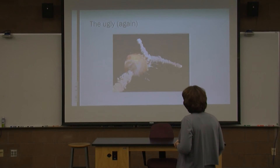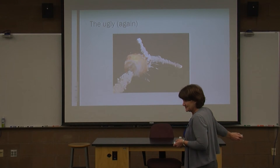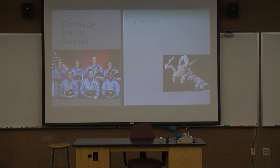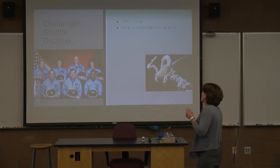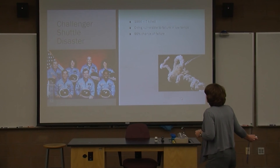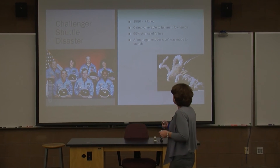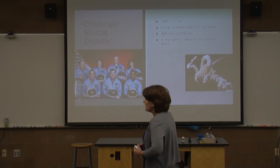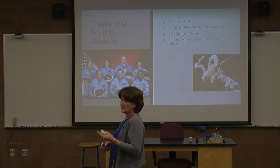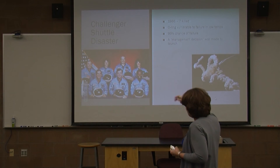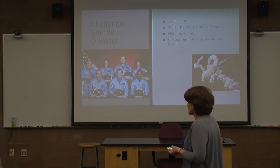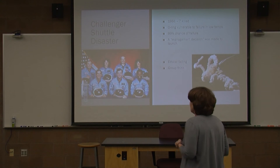Another ugly example: the Challenger. Did you know the Challenger disaster could have been avoided? The O-rings. Seven astronauts were killed. They knew the O-rings were vulnerable to failure in low temperatures — they knew there was a 99% chance of failure. Again, a management decision was made to continue with the launch. There were three subcontractors evaluating the situation: two said go ahead, one said it's not safe, don't do it. But they felt pressure from the public and their customer, NASA, to go ahead. They had postponed the launch twice already. The third person gave in — so they had both group think as well as ethical fading to go ahead and do the launch.